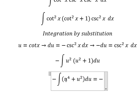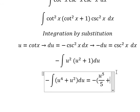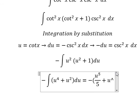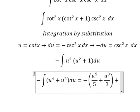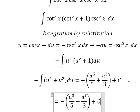The integral of u to the power of four gives us u to the power of five over five. For u squared, we have u to the power of three over three, and we add the constant C. Substituting back, u equals cotangent x.